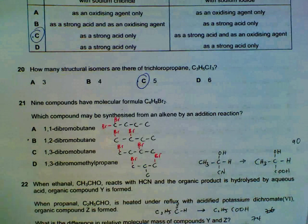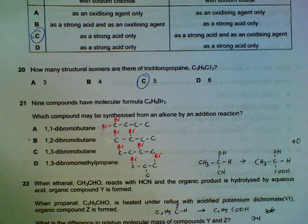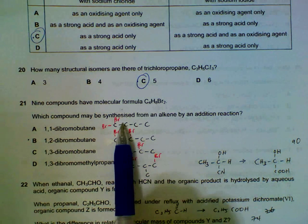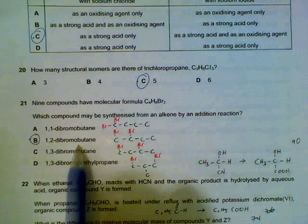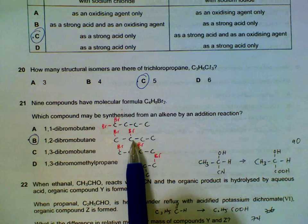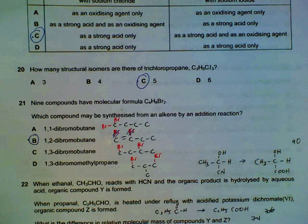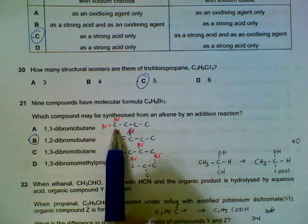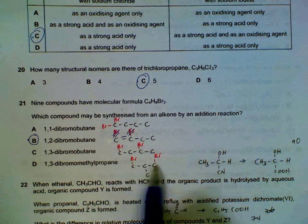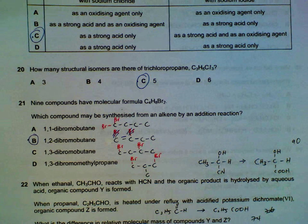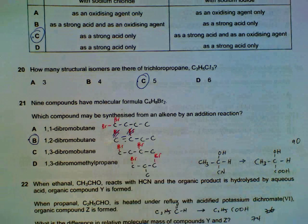21, which compound can be synthesized from an alkene by addition reaction? Answer is B, 1,2-dibromobutane, because the bromines are on neighboring carbons meaning they can actually come from an alkene the double bonds. Those that come from the same that has bromine on the same carbon, or bromines on carbons that are too far apart, non-neighboring, will not be coming from alkene because the double bond has to be between two carbon side by side when the...